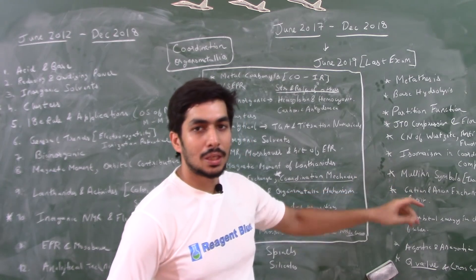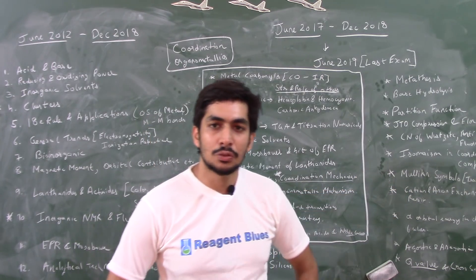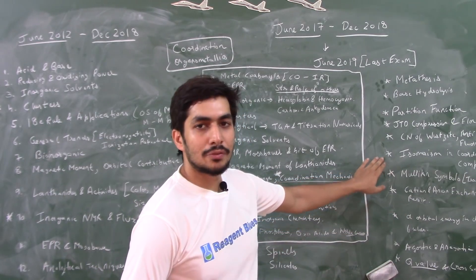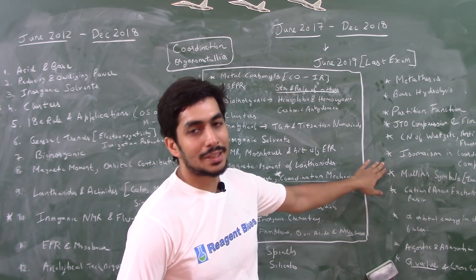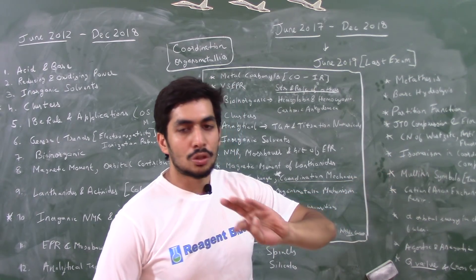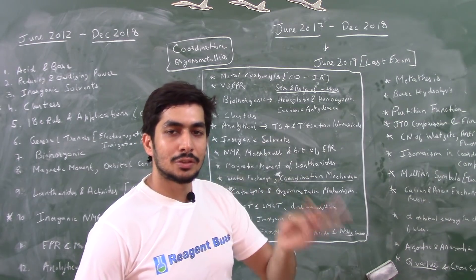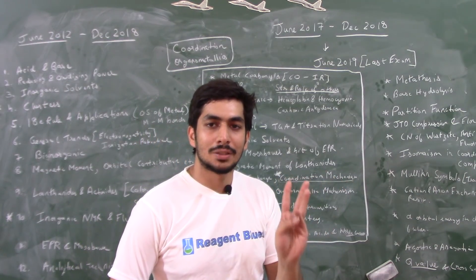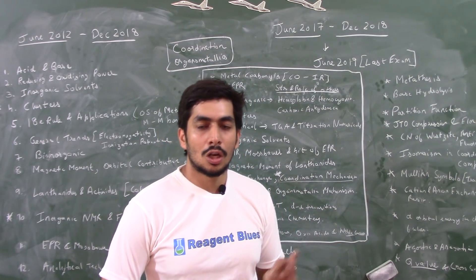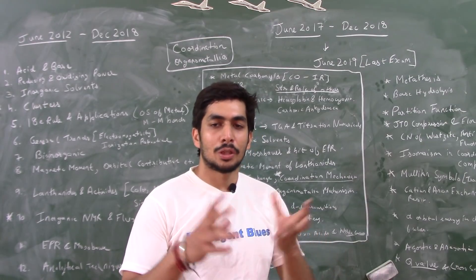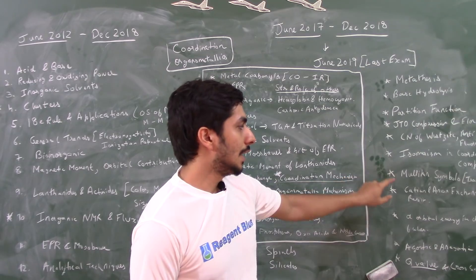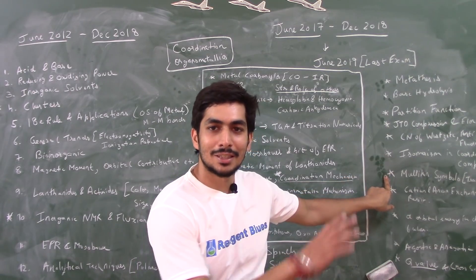Isomerism in coordination complexes — I would double-star this topic. I have a very strong intuition it will be asked again; I had the same intuition for GATE 2019 and indeed a question appeared there. Please do this properly — both optical activity (which complex is optically active or inactive) and geometrical isomerism (how many stereo isomers exist for a particular coordination complex).